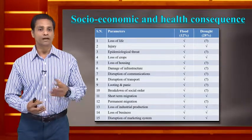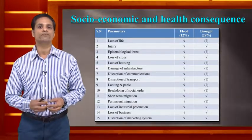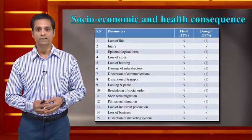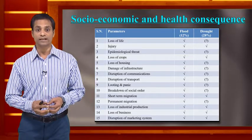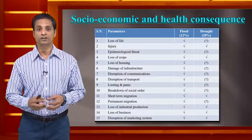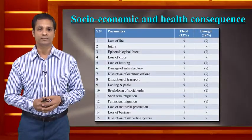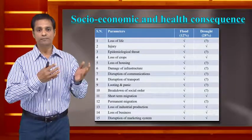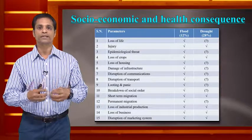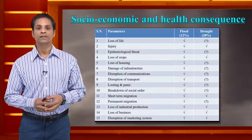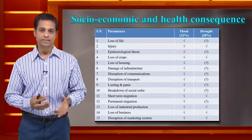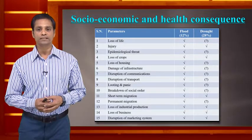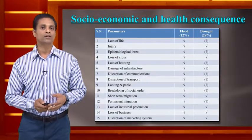This slide indicates the socioeconomic and health-related consequences with 15 parameters. During a flood, there is a probable chance of loss of life, whereas during drought, people can typically get water supply from surroundings. Injuries can occur as water flows from upstream to downstream, moving heavy loads. Epidemiological threats arise because flood water may get contaminated, having significant impacts on human health.